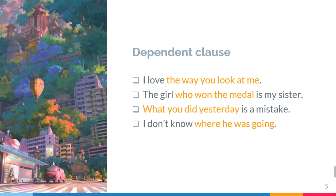The third example: 'What you did yesterday is a mistake.' The initial sentence was 'Your egg is a mistake,' and 'your egg' is developed into a specific action — 'what you did yesterday' — which becomes a dependent clause in this sentence. So we cannot write 'What you did yesterday.' alone — it is once again incorrect, but should be together with an independent clause.